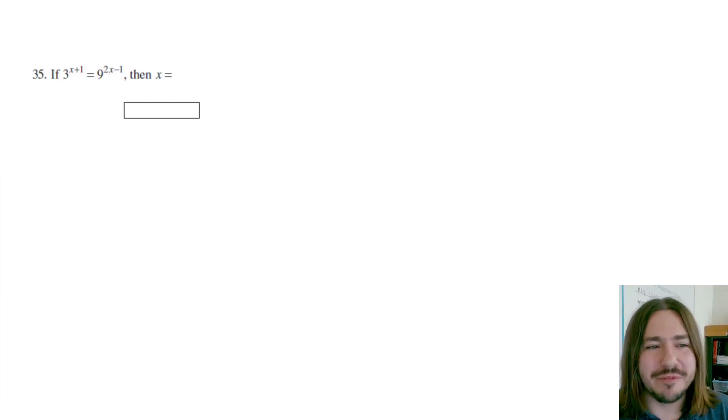Hey y'all, welcome back. Number 35 has an exponential equation that we're trying to solve for x. So we're going to use something called the one-to-one property to solve this. But when you have two equal powers like this, your first instinct should be to try to rewrite them both with the same base.